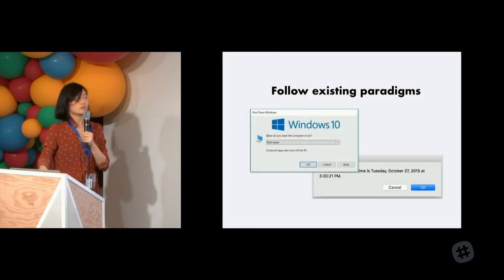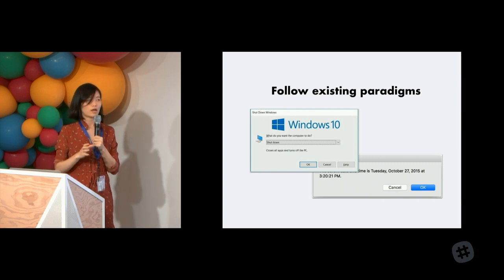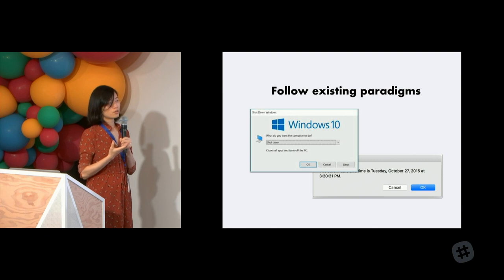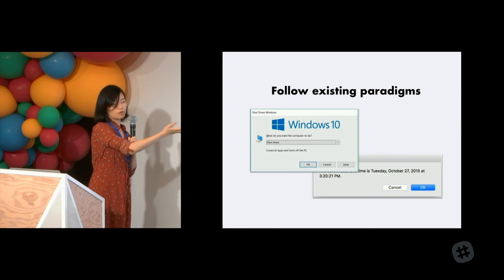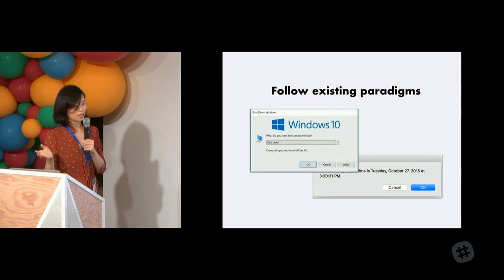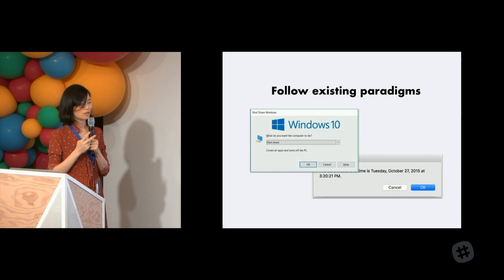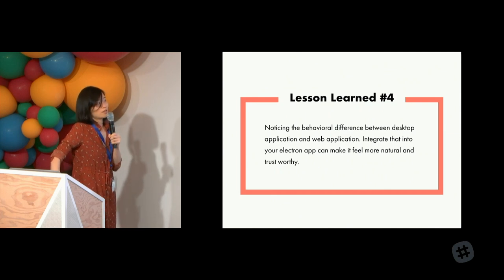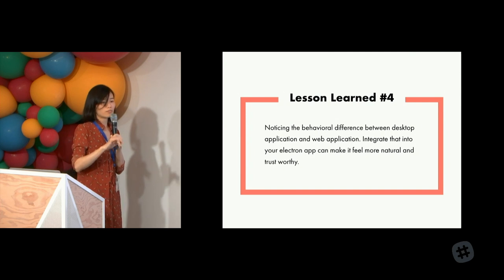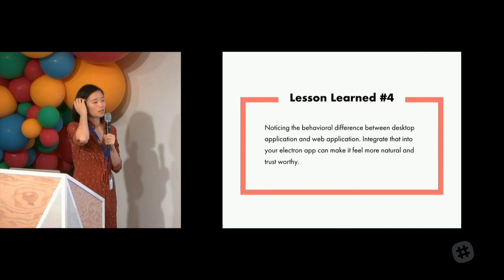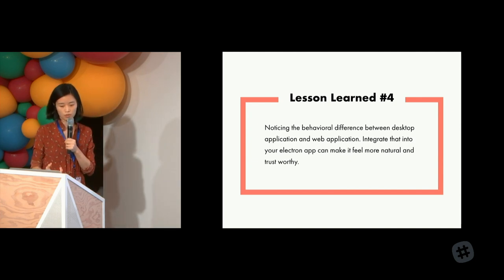You'll also notice that desktop application interface labels — in Sketch, for example — you can't select them with your mouse. To fake that with CSS, set user-select to none. In general, you have to support the existing paradigm for whatever platforms you support. For Windows, put the OK button on the left; for OSX, put it on the right — which means you'll probably need two different CSS files for your Electron app. Notice the behavioral differences between desktop and web applications, and stick with the desktop conventions so it looks natural and trustworthy to users.